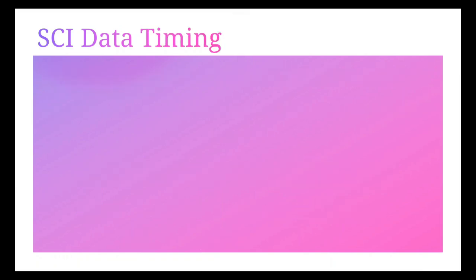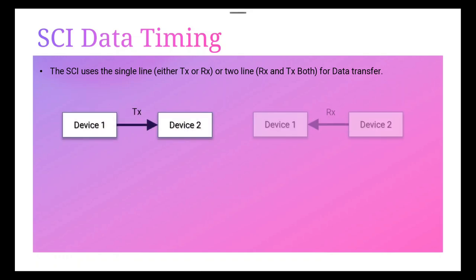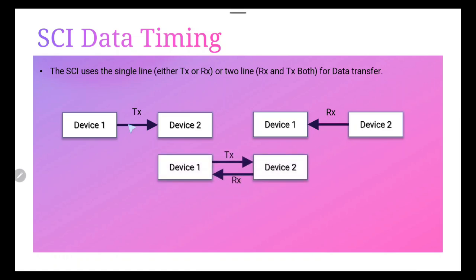The SCI asynchronous communication format uses either single-line (one-way) or two-line (two-way) communications. In this mode the frame consists of a start bit, 1 to 8 data bits, optional even or odd parity bits, and one or two stop bits. The single-line mode is known as half-duplex and the two-line mode is known as full-duplex.